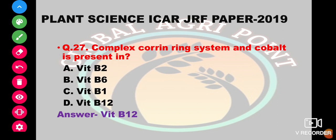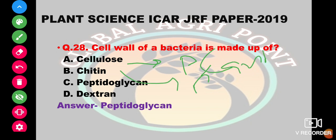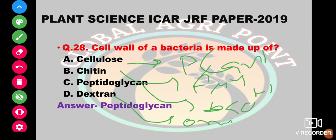Cobalt is present in vitamin B2, vitamin B6, vitamin B1, or vitamin B12. The answer is vitamin B12. The cell wall or peptidoglycan — cellulose is the main component of plant cell walls, chitin is found in fungi, peptidoglycan is found in bacteria, and dextrin is a minor component. So the answer is peptidoglycan.